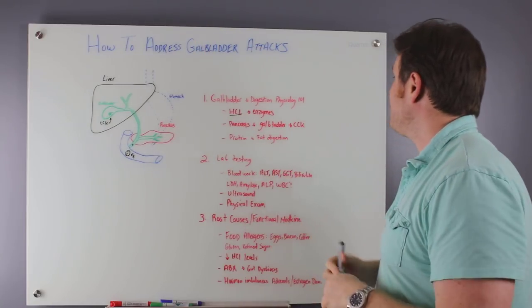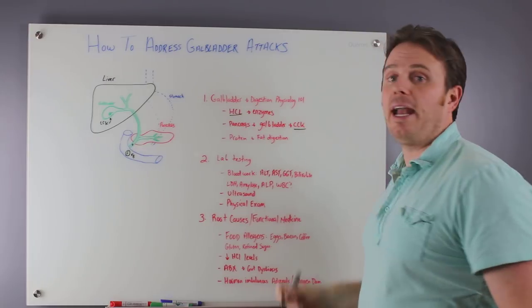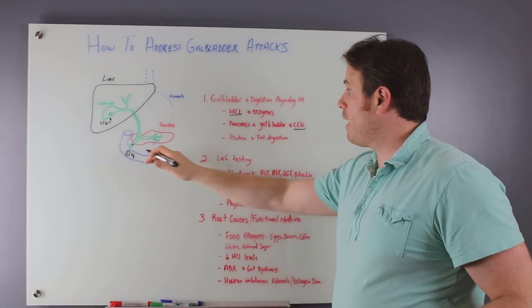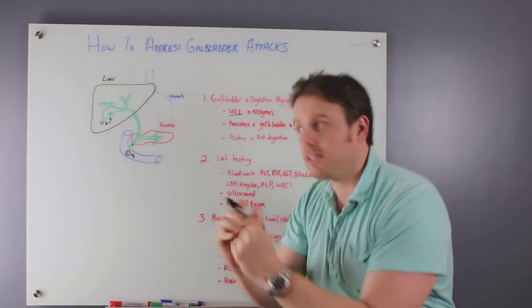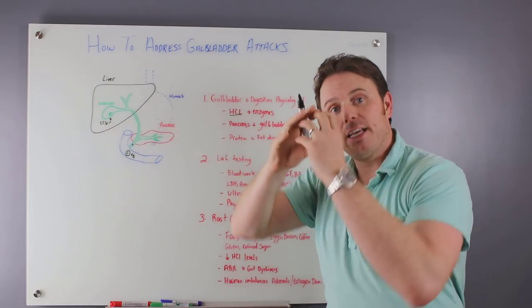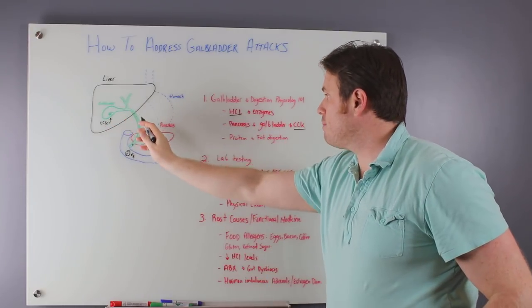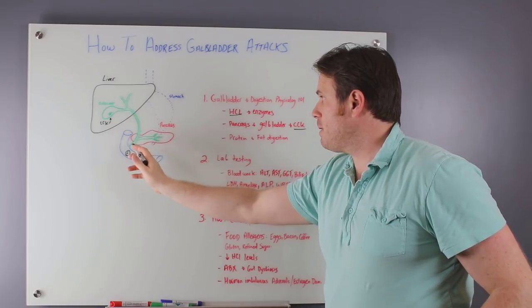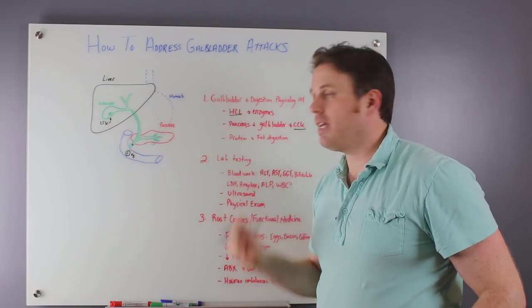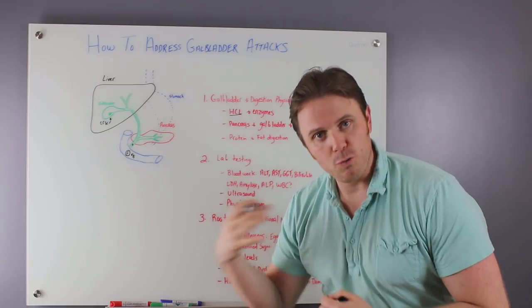That acidic chyme will trigger our pancreas to make bicarbonate to bring that pH back up. It's also going to trigger a hormone called cholecystokinin, CCK, and that's going to stimulate that gallbladder here to contract. That gallbladder here, CCK hits it, it contracts, and that bile comes out here via the common hepatic bile duct into the small intestine, hits the fat, emulsification happens.